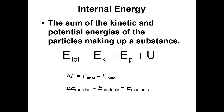Internal energy is what we're interested in in the chemical lab. The sum of the kinetic and potential energies of a system makes up its internal energy U. In the lab, we don't move the beaker — it stays put, so there's no change in kinetic or potential energy of the system. That means the total energy of the system equals the internal energy, and we are interested in the change of energy: delta E equals the energy of the final state minus the energy of the initial state.